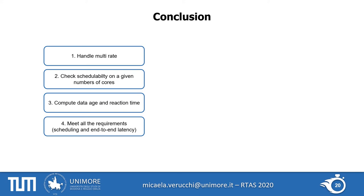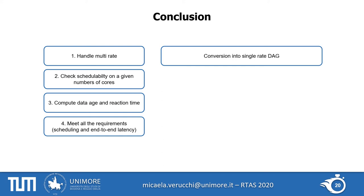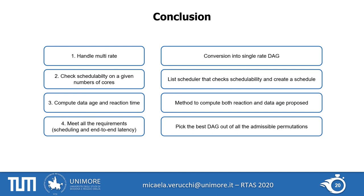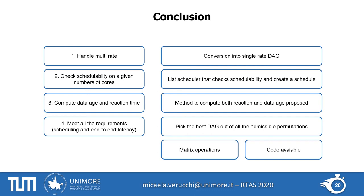In conclusion, we were able to handle multi-rate by converting the task set into a single-rate DAG while preserving original periods thanks to synchronization and dummy nodes. We could check and build the schedule of each DAG using list scheduling. We proposed a new method to compute both reaction time and data age. Overall, we propose a solution able to meet the needed requirements, picking the best DAG from all admissible permutations by a cost function. The whole solution is based on matrix operations and the code is released as open source.